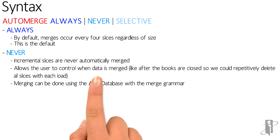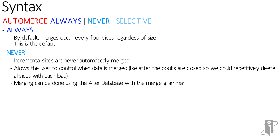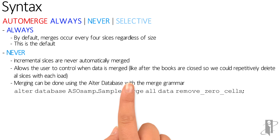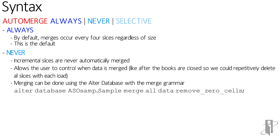We would do that using MaxL statements. Here's the example: alter database ASO-SAMP merge all data. And we have the option to even remove cells that would become zero values.